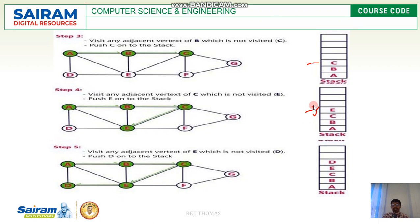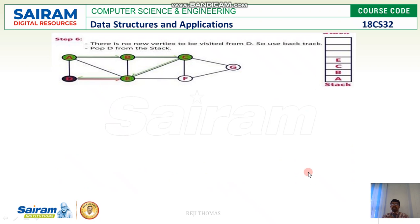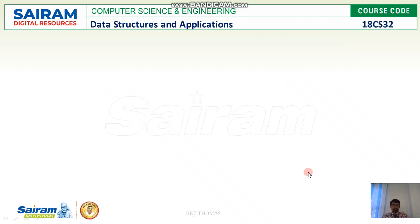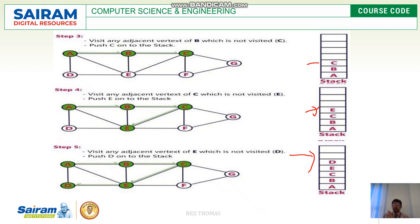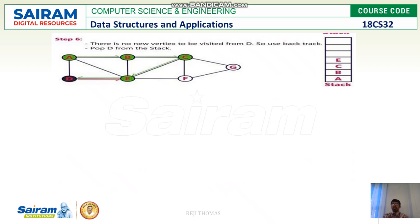Next, visit any adjacent vertex of E which is not visited. From E we get D as the unvisited vertex and push D onto the stack — the stack now has five elements. When you examine D, you find there is no more unvisited vertex to be inserted from D. So we backtrack and take out D from the stack. There are no new vertices to be visited from D, so pop D.